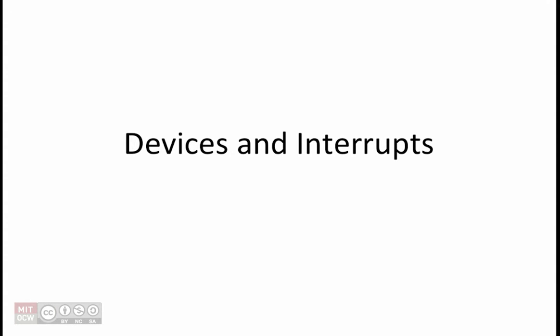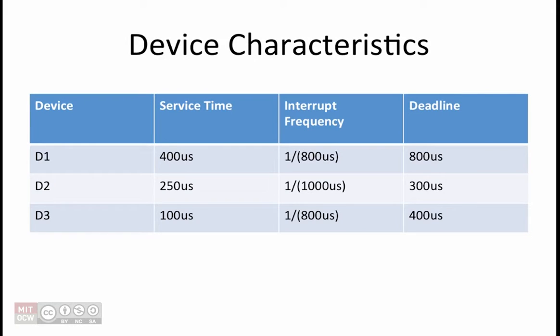For this problem, assume that we have a computer system that has three devices: D1, D2, and D3. Each of these devices can cause interrupts in our system. This table summarizes the interrupt characteristics of our three devices.